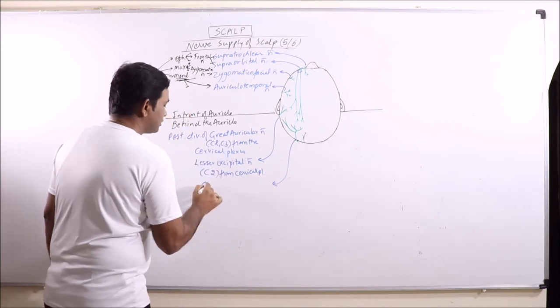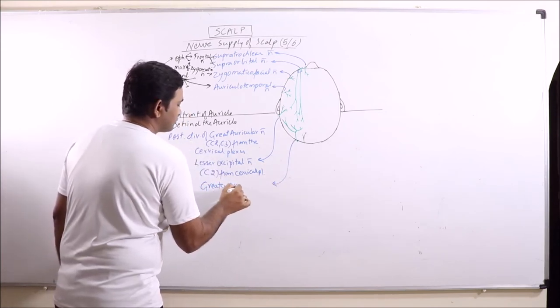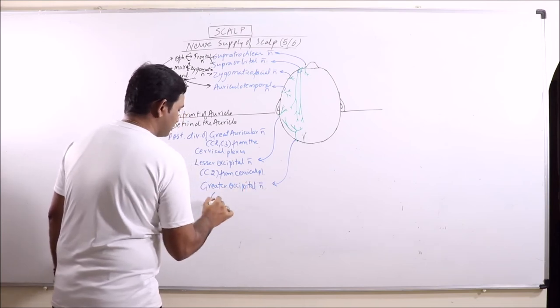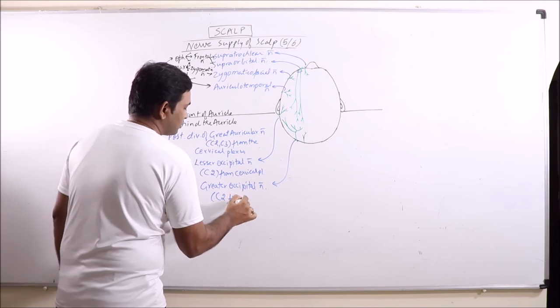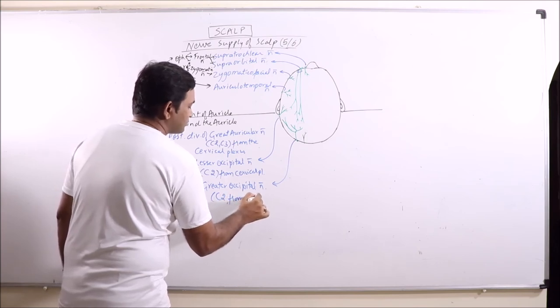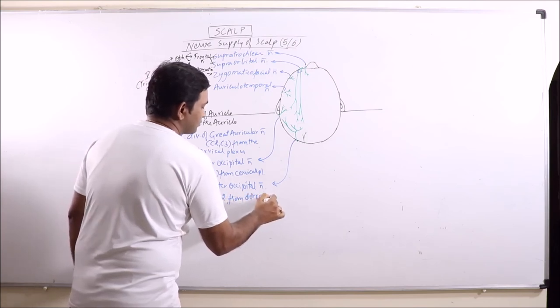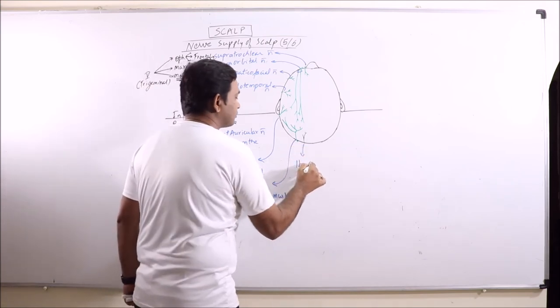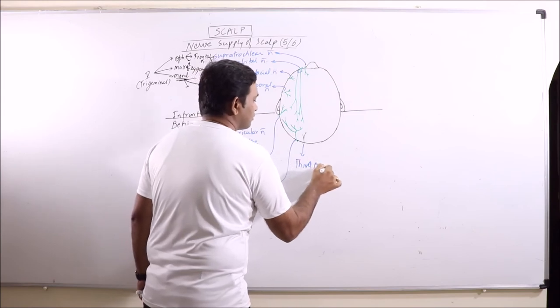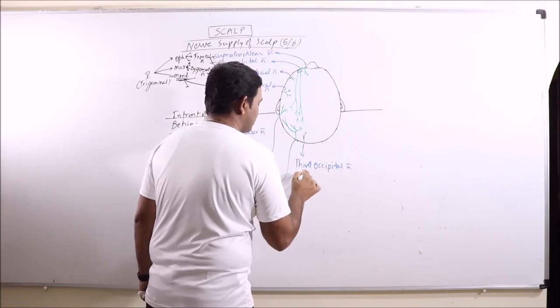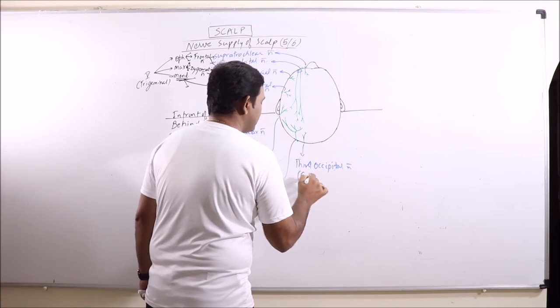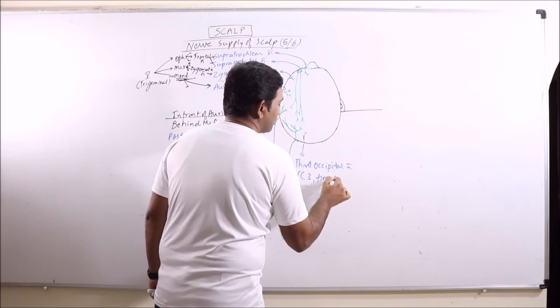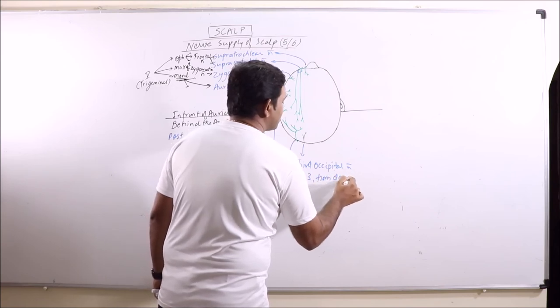This is the greater occipital nerve, C2 from the cervical plexus. And this one is third occipital nerve, C3, again from dorsal ramus.